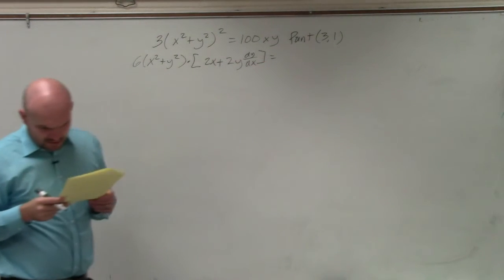Now what are our values? We have x = 3 and y = 1. Let me double-check: it's 100y minus 12x times (x² + y²). So we plug in: 100 times 1, minus 12 times 3, times (3² + 1²), all over 12 times 1 times (3² + 1²), minus 100 times 3.